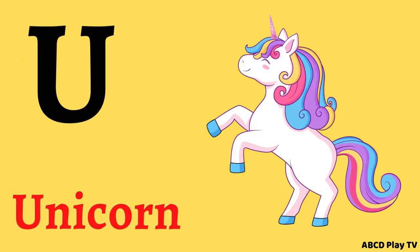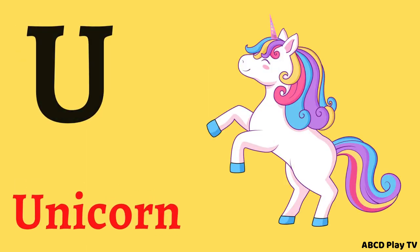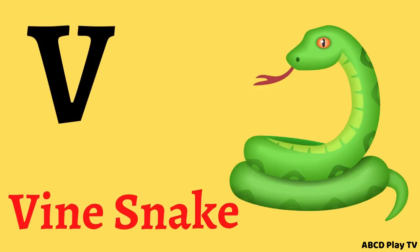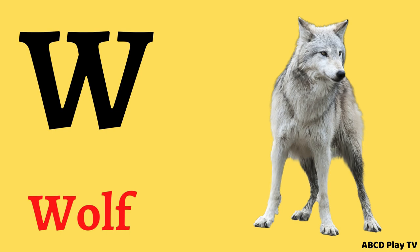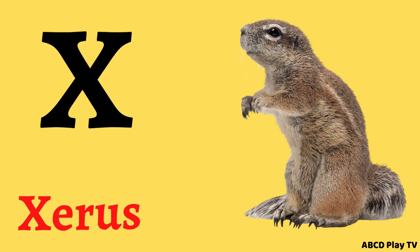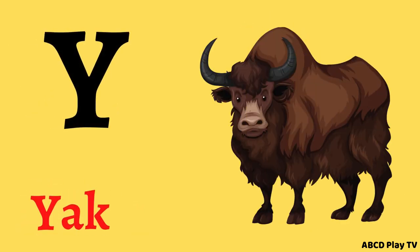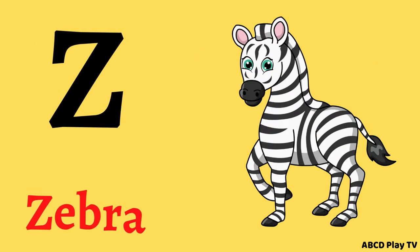T for Tiger, U for Unicorn, V for Wine Snake, W for Wolf, X for Exoros, Y for Yag, Z for Zebra.